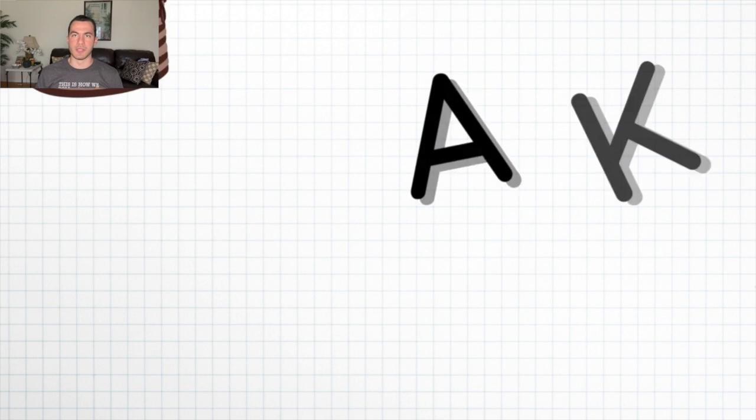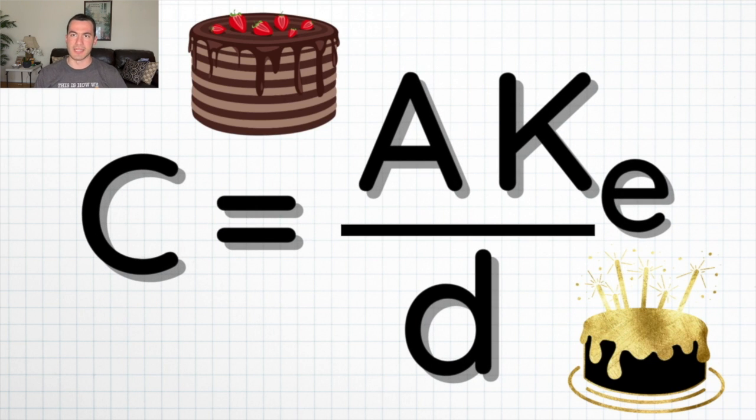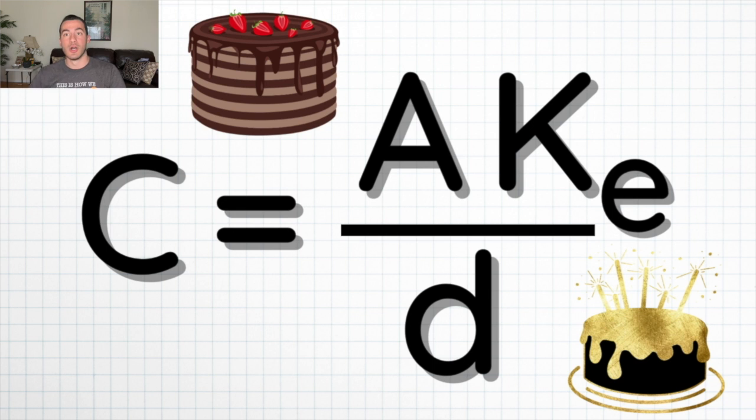I also know another capacitance formula that I like to call 'caked,' such that capacitance is equal to area times the dielectric constant over distance — you get C-A-K-E-D. It's little stuff like these funny tricks and sayings that help you memorize formulas on the MCAT, making it a way easier process. Use mnemonics to your advantage.